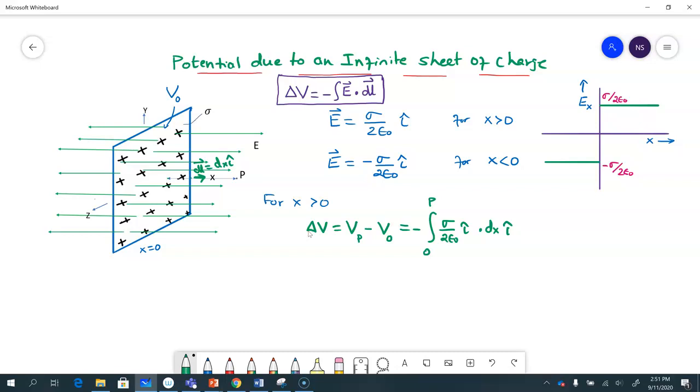So this is actually—I could have called it just, instead of point P, I could have said 0 to x. Okay, so it's from 0 to x, and i dot i is just 1. So this ends up being just negative sigma by 2 epsilon 0, integral dx will just give me an x. So I can write this down as V at point P is equal to V 0, if I bring it to the other side, minus sigma by 2 epsilon 0 times x.